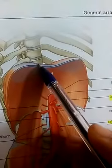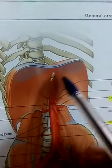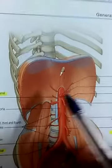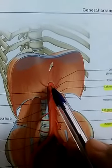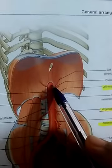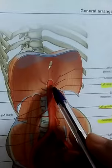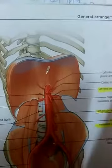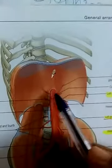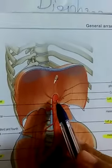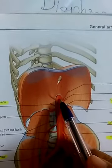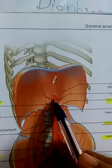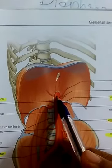Any structure which passes through the central tendon or the esophageal hiatus will pierce the diaphragm. However, there is an aortic opening — the aortic opening lies behind the median arcuate ligament of the diaphragm. The aorta is passing behind the diaphragm, not through it. There is a concavity called the aortic hiatus, so it is not a true opening. Therefore, the aorta, thoracic duct, and azygos vein passing through the aortic hiatus do not pierce the diaphragm.